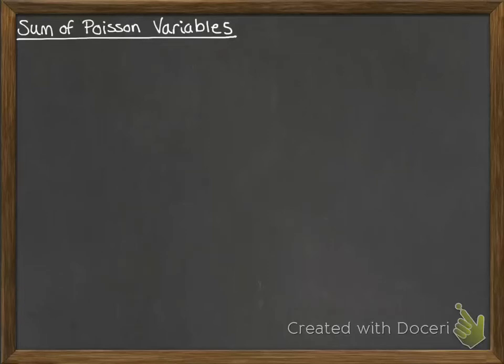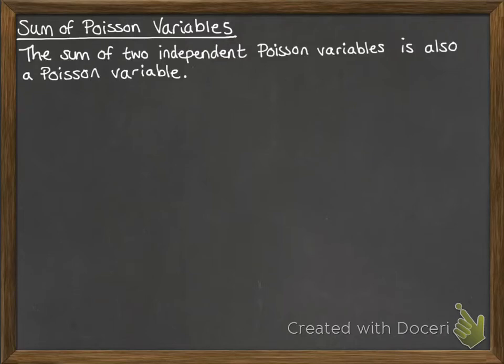This video looks at combining Poisson variables, and in particular looking at the sum of them. So if you added together two distributions that were both Poisson, as long as the two distributions are independent of each other and they're both Poisson, then the sum of them will also be a Poisson variable.